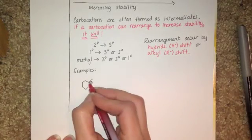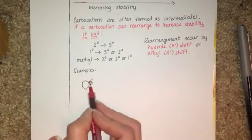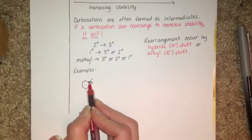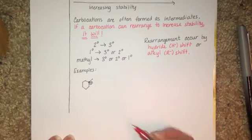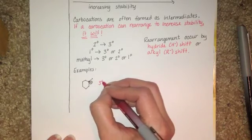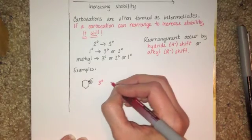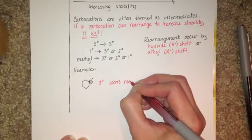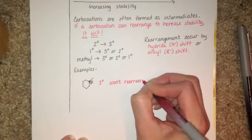That carbocation, that carbon atom, has one, two, three alkyl groups attached to it. It's tertiary. That means that it doesn't need to rearrange. It won't rearrange. It can't become any more stable than it already is. So it's good.